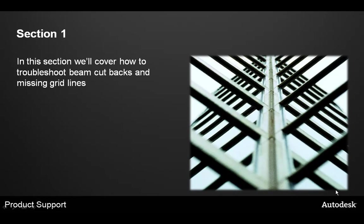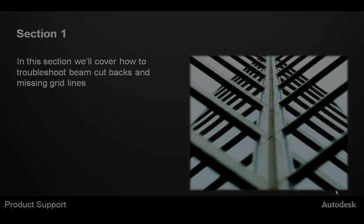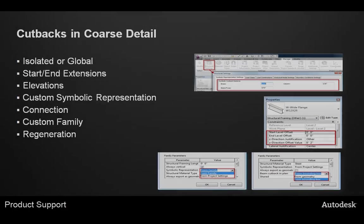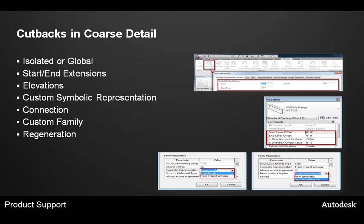In this first section, we'll talk about how to troubleshoot beam cutbacks and how to correct missing grid lines. If your beams aren't cutting back correctly in a coarse representation, there are a few things you can check. First, is the issue isolated to a few beams, or is the cutback incorrect throughout the entire file?